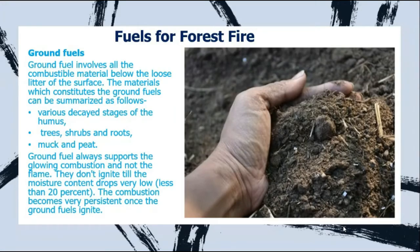Now we should discuss the various kinds of fuels that can lead to forest fires. In forests, fuels are of various types. Ground fuels involve all combustible materials below the loose litter of the soil — the organic portion of the upper soil, which may consist of humus at various stages of decomposition, trees, shrubs, roots, underground muck, or peat.